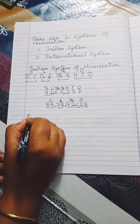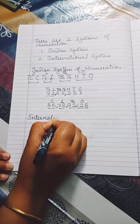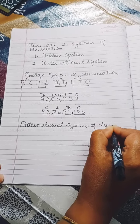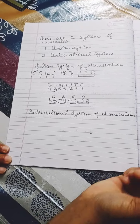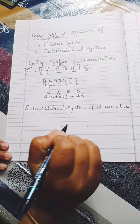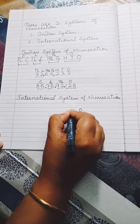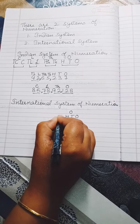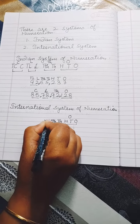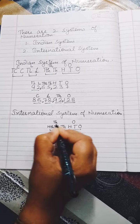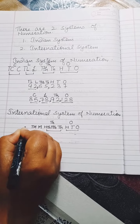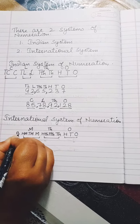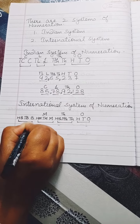The other system of numeration is the International system. In the International system, every period has three digits. Ones, tens, and hundreds come under the ones period. Thousands, ten thousands, and hundred thousands come under the thousands period. Millions, ten millions, and hundred millions come under the millions period. Billions, ten billions, and hundred billions come under the billions period.